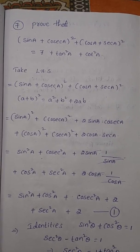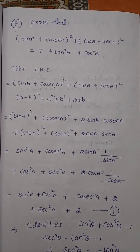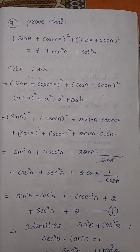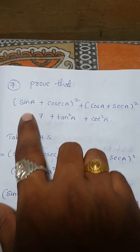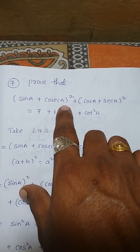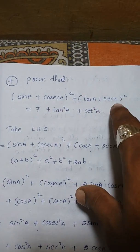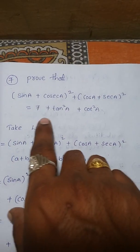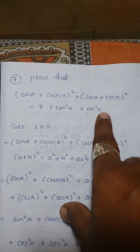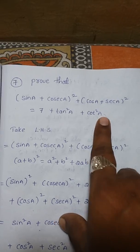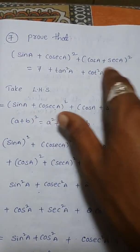Question number 7, page number 292, exercise number 11.4, trigonometry. We have to prove that (sin A + cosec A)² + (cos A + secant A)² is equal to 7 + tan²A + cot²A. To prove this, first take the left-hand side.